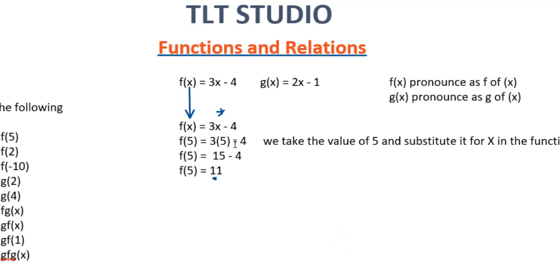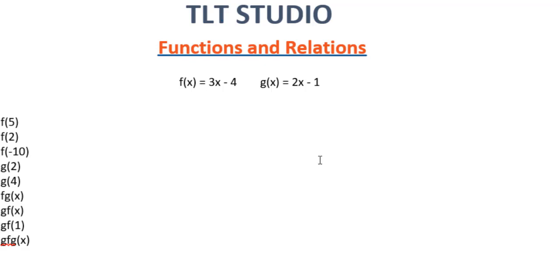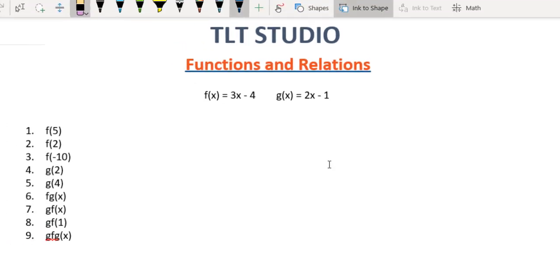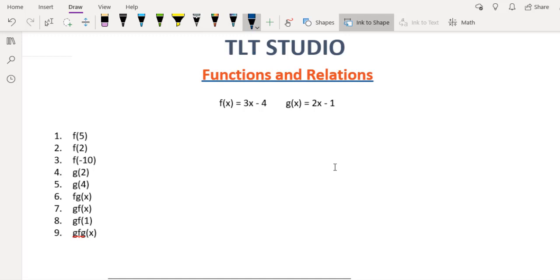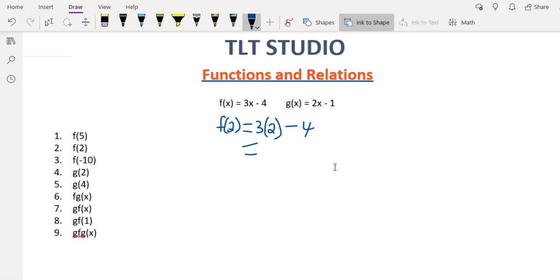Let us do another one. We have a second example which is f of 2. To solve f of 2, all we have to do is substitute the value of 2 into the f function. So we have f of 2 equal 3 times 2, substitute 2 anywhere we see x in the function, minus 4. This is 3 times 2 which is 6 minus 4, which is equal to 2.